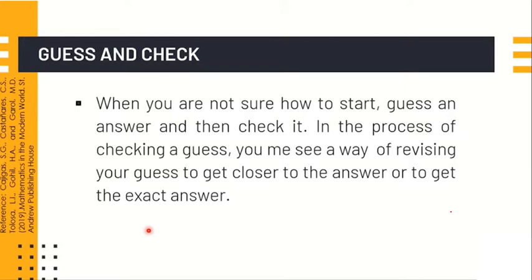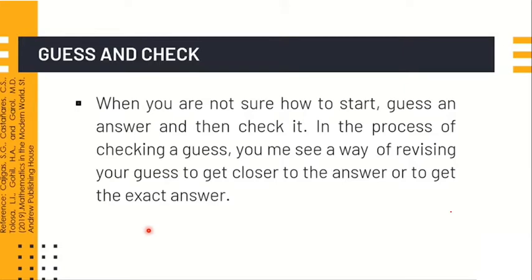If you are not sure that your solution is correct, you need to revise it to get the exact answer. Example number one: Glenda bought books and CDs as gifts. All together she bought 12 gifts and spent 840 pesos. The books cost 60 pesos each and the CDs cost 90 pesos each. How many of each gift did she buy?